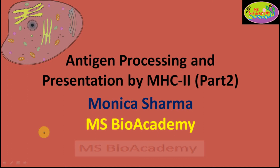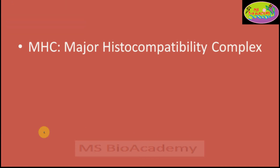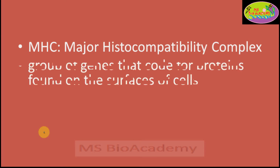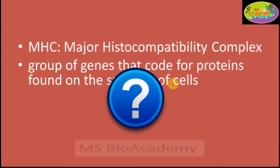So what are MHCs? MHCs — we know these are the major histocompatibility complex. These are coded by a group or cluster of genes present on chromosome number 6 in humans, and in the rat it is chromosome number 17. So these genes are basically coding for proteins which are the MHCs.